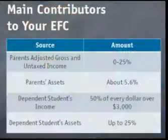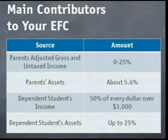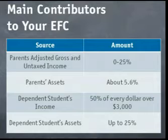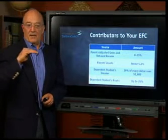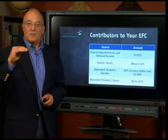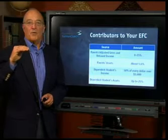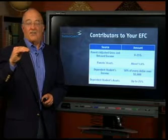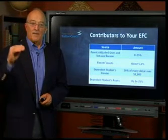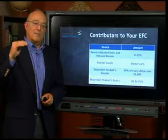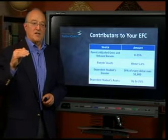The parent's adjusted gross income — that's the bottom line on the front page of your 1040 before you get clever. The formula will be based on how much that number is. If you have a low income, the formula won't want anything. But as you start moving up in income, the formula will want not only more money, but a bigger percentage of your money.